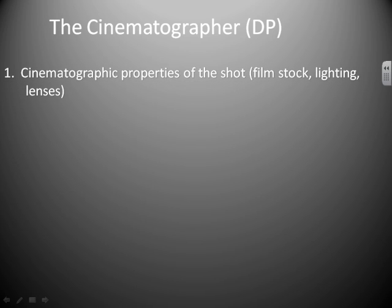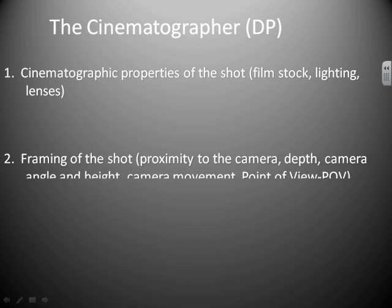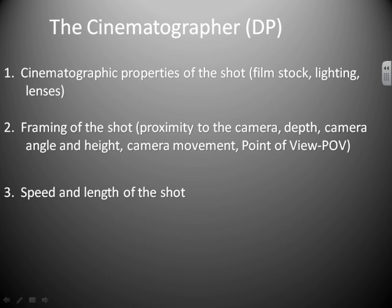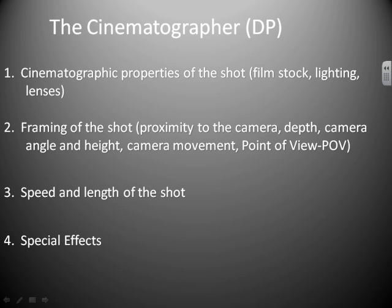The DP is responsible for the cinematographic properties of the shot, such as film stock, lighting, and lenses. The framing of the shot, which includes proximity to the camera, depth, camera angle and height, camera movement, and point of view. The speed and length of the shot. And special effects.